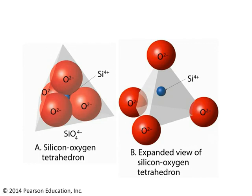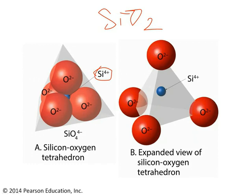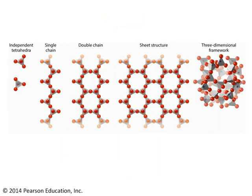All silicate minerals have something in common: they contain silica. In general, the chemical formula for silica is SiO2. What's shown in these images is SiO4, because we're showing the silicon-oxygen tetrahedron. This is a key structure in all silicates. You've got a silicon atom, shown in blue, surrounded by four oxygen atoms, the large red atoms. Those four oxygen atoms define a four-sided figure around the central silicon atom — a tetrahedron. The plural of tetrahedron is tetrahedra.